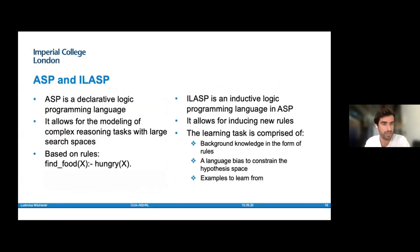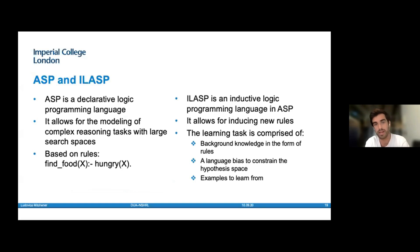The final piece of the puzzle to understand the tools we've used to build our framework is ASP and ILASP. ASP is a declarative logic programming language that uses rules such as 'if hungry, find food,' and is particularly adept at solving complex reasoning tasks with large search spaces. ILASP is an ILP language that uses ASP and induces new rules. The learning task is comprised of background knowledge in the form of rules, a language bias to constrain the hypothesis space, and examples to learn from.